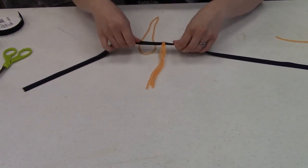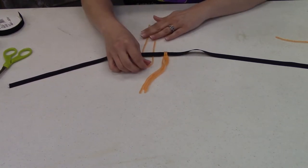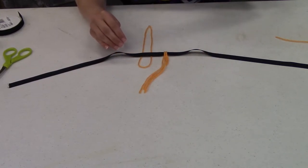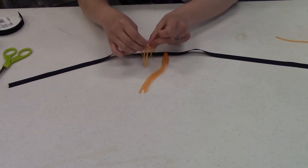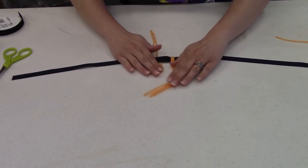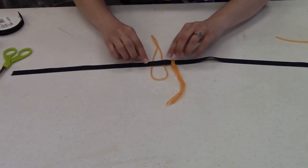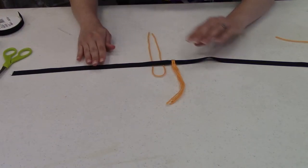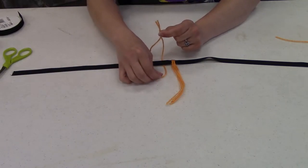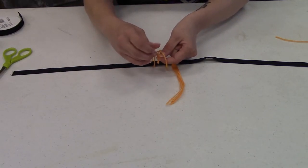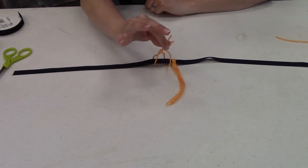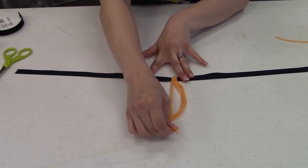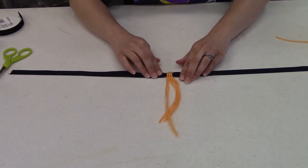All right, so what you're going to end up doing is looping it under and through the ribbon, like under and through the ribbon. So you can see how I've laid it down. So take your ends and put it through the loop on your yarn. And you just tie it like that.